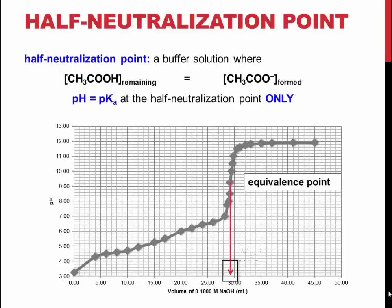Graphically, the neutralization point can be easily found by dividing the volume of the equivalence point by 2. Interpolation to the y-axis from this point gives the point at which the pH is equal to the pKa, and the concentration of the acetic acid and bases are equal.